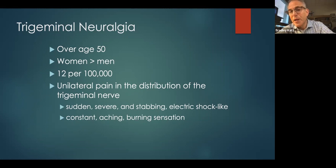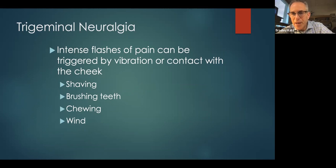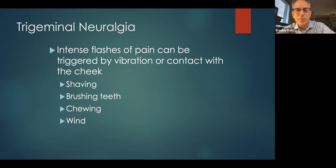Trigeminal neuralgia can coexist with migraine, making things more confusing. These intense flashes of pain can be triggered by vibration or contact with the cheek, sometimes wind, shaving, brushing teeth, or chewing — anything stimulating the trigeminal nerve. These triggers distinguish trigeminal neuralgia from migraine, which can also be unilateral.